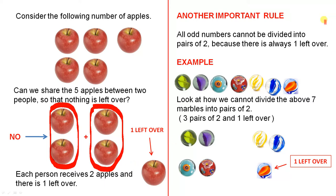Another important rule: odd numbers cannot be divided into pairs of two because there is always one left over. Here is an example.